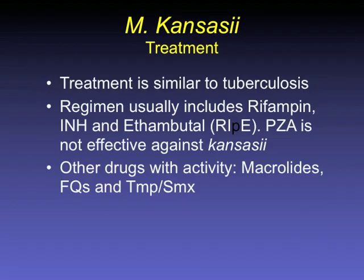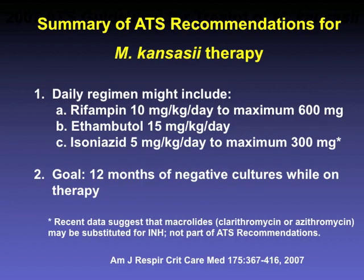For kansasii treatment, it's treated very much like M. tuberculosis with RIPE therapy, but take out the P — it's RIE, because pyrazinamide is not effective against kansasii. Other drugs with activity are listed. The 2007 guidelines recommend RIE with a goal of 12 months of negative cultures while on therapy. Recent data suggests macrolides may be substituted for INH, but that's not part of the official recommendations.